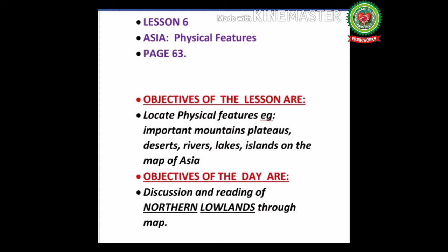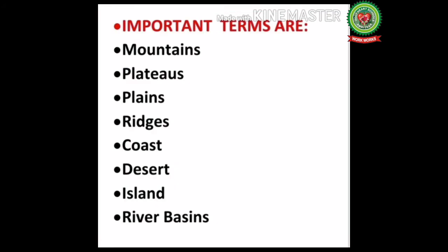Students, today we are going to be focused on the northern lowlands through reading and discussion on the map. Before we start, let's recall the important terms. Number one is mountain: a highland with pointed peaks, for example Mount Everest.